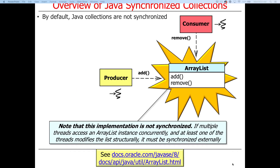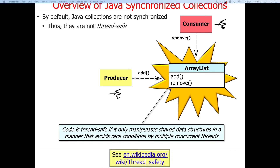We'll start out with the synchronized collections first. By default, Java collections are not synchronized. What that means is that if you run them in multiple threads, you're going to have problems — the classic concurrency problems. Things are not properly protected from race conditions and visibility issues. In particular, they're not thread safe. If one thread makes a change, another thread might not see that change because of memory visibility delays built into the Java memory model, or you may have race conditions where things are not accessed in any protected way, so the state can get corrupted.